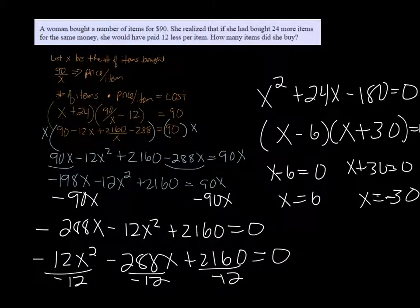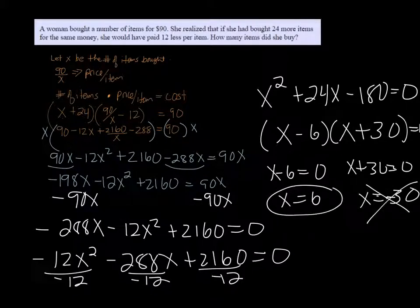Now, it doesn't make sense for her to buy a negative amount of items, so she must have bought six items.